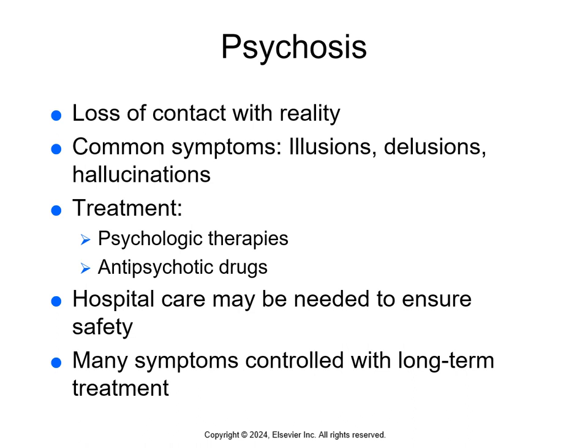Then we have psychosis — this is loss of contact with reality. Common symptoms are illusions, delusions, and hallucinations. We treat these with psychological therapies and antipsychotic medications. There is a box on page 473 that lists the symptoms of psychosis and another that lists its potential causes. Treatment of psychosis includes psychological therapies like counseling, guided discussion, and cognitive behavior therapy to help change or eliminate unwanted thoughts or beliefs. We also use antipsychotic drugs to help decrease hallucinations and delusions and to help stabilize thinking and behavior.